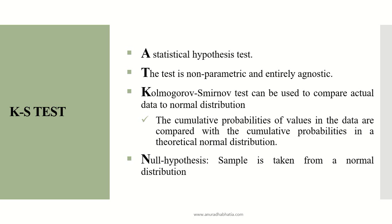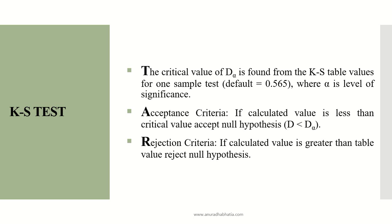In the KS test, we need to prove the null hypothesis. The null hypothesis is that a sample is taken from a normal distribution. The KS test follows a few simple things. There is the critical value, which is D-alpha, where alpha is the level of significance.